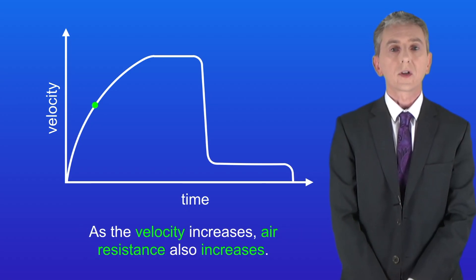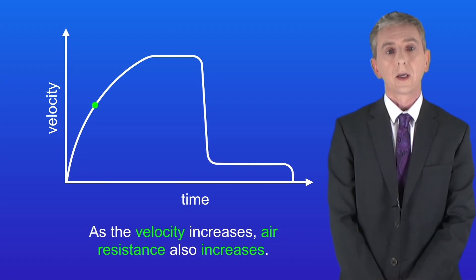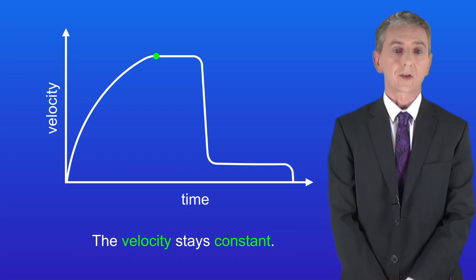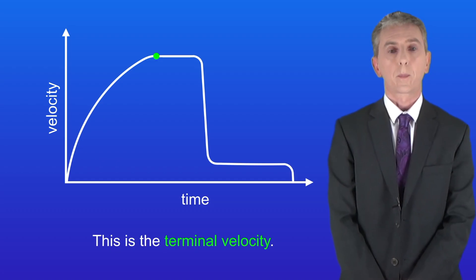As the velocity increases, air resistance also increases. When air resistance balances weight the resultant force is zero and the velocity stays constant. This is the terminal velocity.